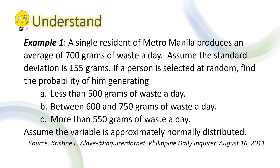Let us have example number one. A single resident of Metro Manila produces an average of 700 grams of waste a day. Assume the standard deviation is 155 grams. If a person is selected at random, find the probability of: (A) generating less than 500 grams of waste a day; (B) between 600 and 750 grams of waste a day; (C) more than 550 grams of waste a day. Assume the variable is approximately normally distributed.